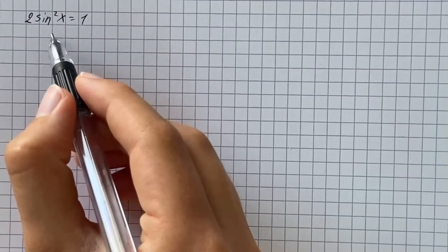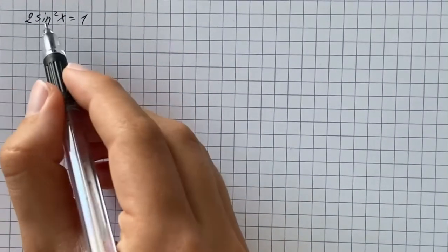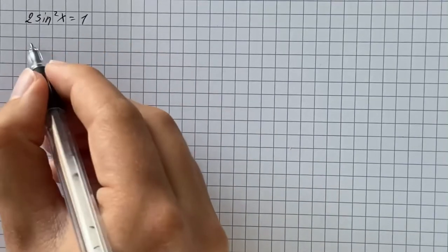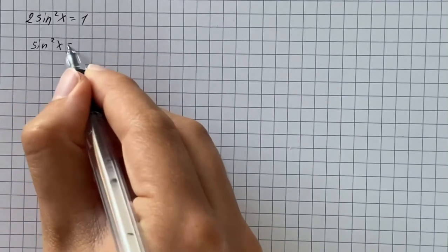We have to solve the given trigonometric equation, which is 2 sine squared x equals 1. So first we divide both sides of the equation by 2.